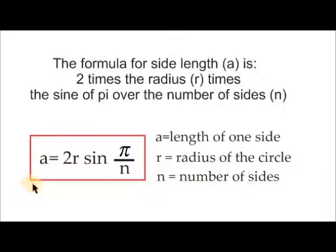The formula for side length A is 2 times the radius R times the sine of pi over the number of sides N.